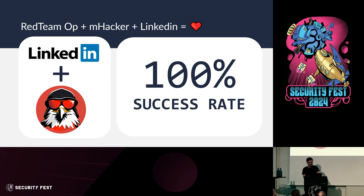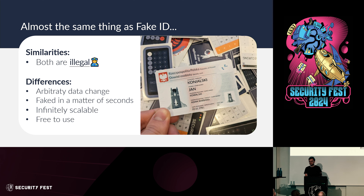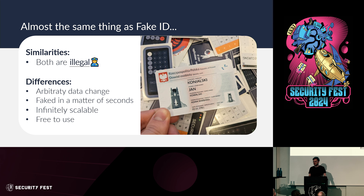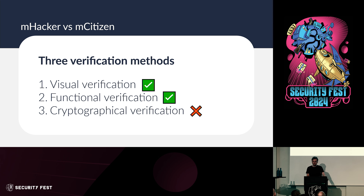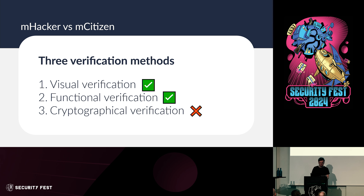Ask yourselves if this is possible with your implementation. What I'm showing is essentially the same as a fake ID, with some differences. It costs nothing to create a new identity, I can change it in seconds, it's infinitely scalable — all I need is a phone — and it's free. But as noted, it only works for the first and second verification methods — you're basically attacking the eyes of the person doing the verification. The cryptographic verification would not be bypassable with this trick.